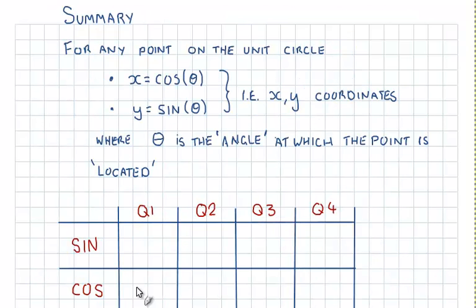So I'll just fill that out in our table here. So sine is positive in the first and second quadrants and becomes negative in the third and fourth. Cos is positive in the first, negative in 2 and 3, and in quadrant 4 it returns to being positive again. So that concludes this series of videos on defining sine and cos using the unit circle.